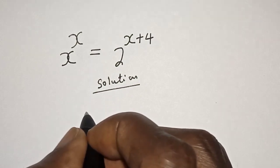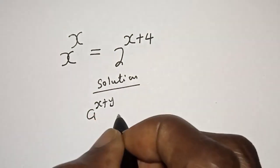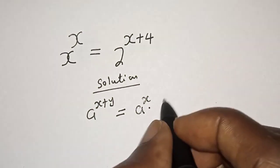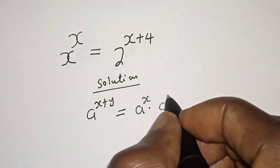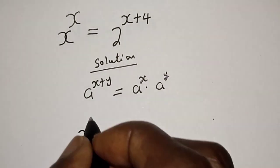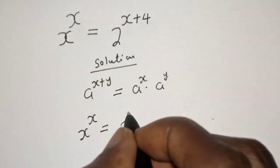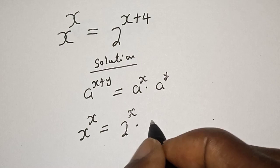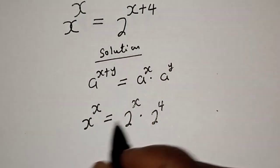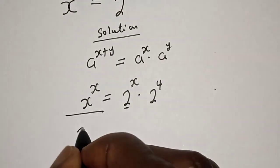Take note of this rule: a raised to power s plus y is equal to a raised to power s multiplied by a raised to power y. Then we have s raised to power s is equal to 2 raised to power s multiplied by 2 raised to power 4.